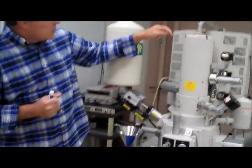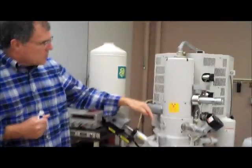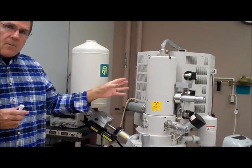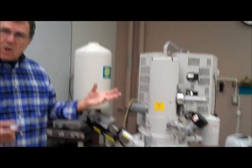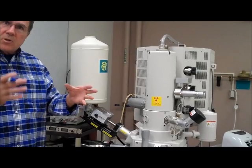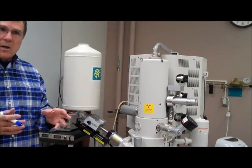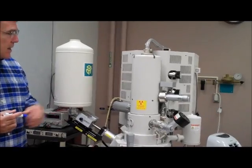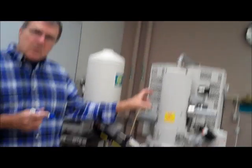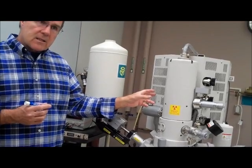So the electrons are accelerated down through the column, and along the way they pass through lenses, so just like an optical microscope would be used, you use lenses to focus and defocus the electron beam, or the light in an optical microscope. And the electron microscope, instead of using glass, we use electromagnets.